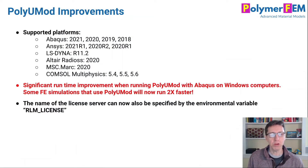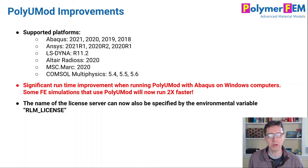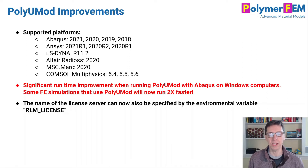The major improvements in PolyUMOD are listed here. The new platforms we support are at the top — particularly new versions of Abacus, Ansys, and LS-Dyna. The 2021 versions of Abacus or Ansys will work. If you are a PolyUMOD user with Abacus running on Windows, you should get the new version because we have made changes to make PolyUMOD with Abacus on Windows run much faster — even up to two times faster in some cases.